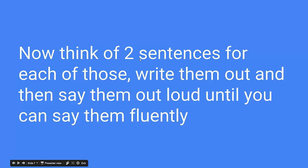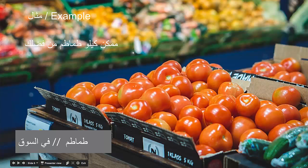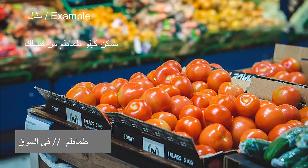Think of two sentences for each of the starters: aw-reet, aw-hibb, and mumkin. Write them out and say them out loud until you can say them fluently. All you're doing is swapping out mumkin — you can change these words for whatever words you know. Make sure you read it out loud until you're fluent in saying it. And that's the end of this lesson — I'll speak to you again soon.